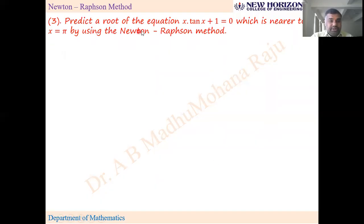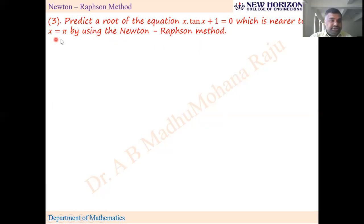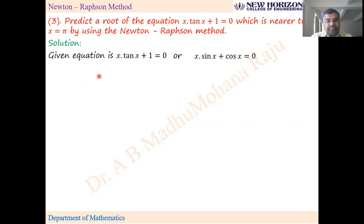Next problem: find a root of the equation x·tan(x) + 1 = 0 which is nearer to x = π, using Newton-Raphson method. Since the question itself specifies where to find the root, no trial and error is needed. Take x₀ = π directly. We can write f(x) = x·tan(x) + 1 = 0, or equivalently as x·sin(x) + cos(x) = 0.